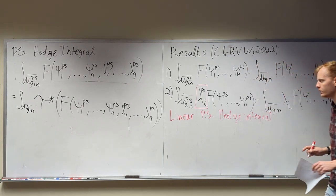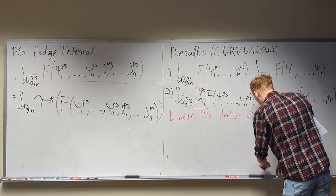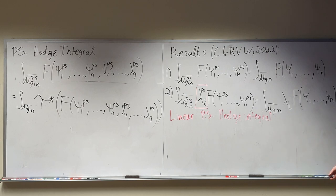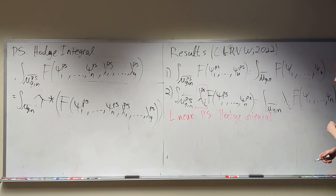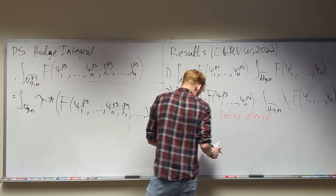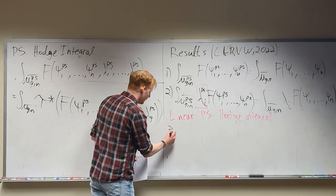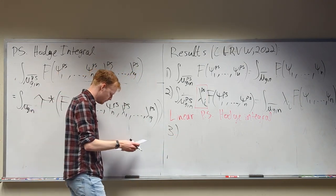You might guess what a quadratic pseudo-stable Hodge integral is. In these first two cases they got exactly the stable counterpart, so first guess is maybe you get the same exact thing in every case — that would be kind of cool and we'd have no work to do. But they found some counterexamples pretty quickly.